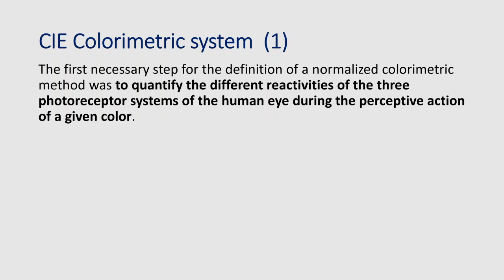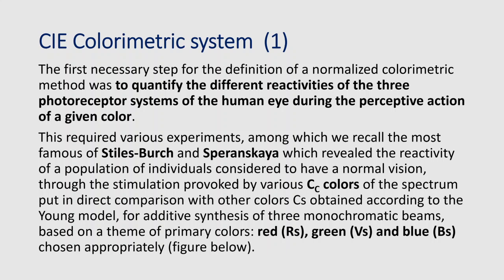Having mentioned the three characteristics, we now introduce the CIE colorimetric system. The first necessary step for defining a normalized colorimetric method was to quantify the different reactivities of the three photoreceptor systems of the human eye during the perceptive action of a given color. You remember the three types of cones — taking into consideration the Young-Helmholtz theory, these three photoreceptors seem to be in charge of acquiring energy in the three different subbands of the visible: red, green, and blue.